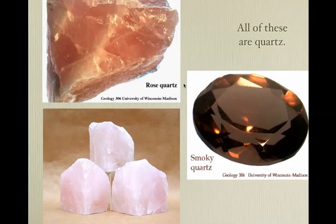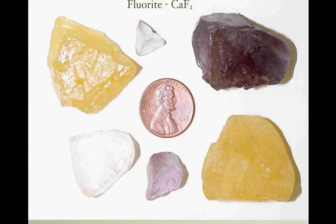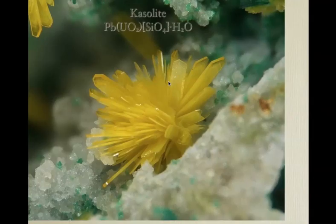Color isn't always reliable. Why? These are all quartz — the same mineral can be many different colors. Here is quartz again in many different colors. Here is fluorite — fluorite can appear in many different colors. Also, different minerals can have the same color. With 4,000 minerals there are a lot of white minerals and a lot of yellow ones.